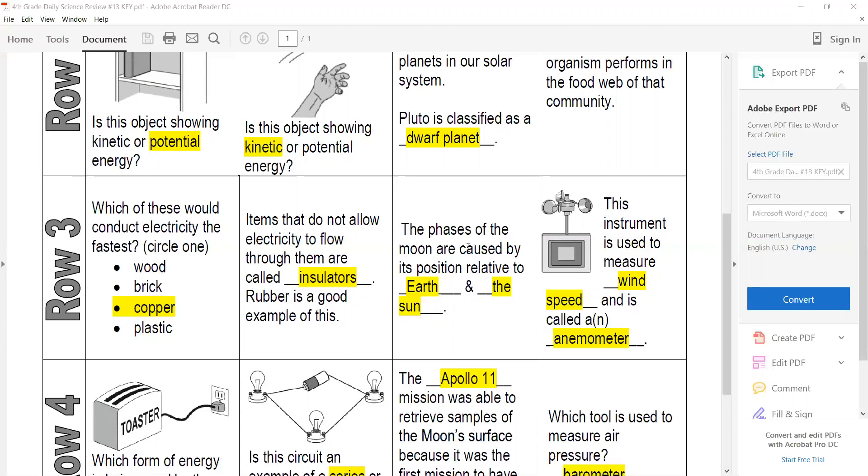The phases of the moon are caused by its position - how it's positioned relative to the Earth and the Sun. The moon does not make its own energy. The moon is actually reflecting the Sun's energy, so depending on how it's located, that determines how much of the Sun's reflection we're seeing.